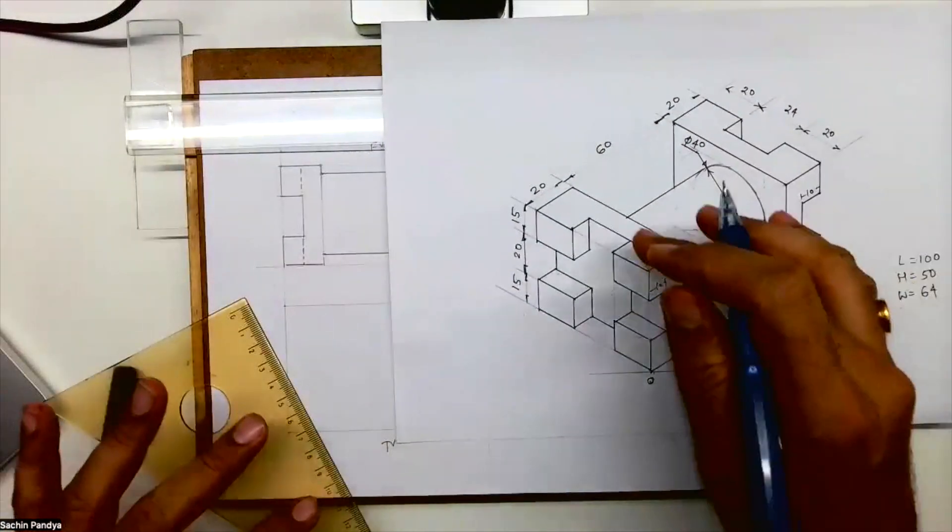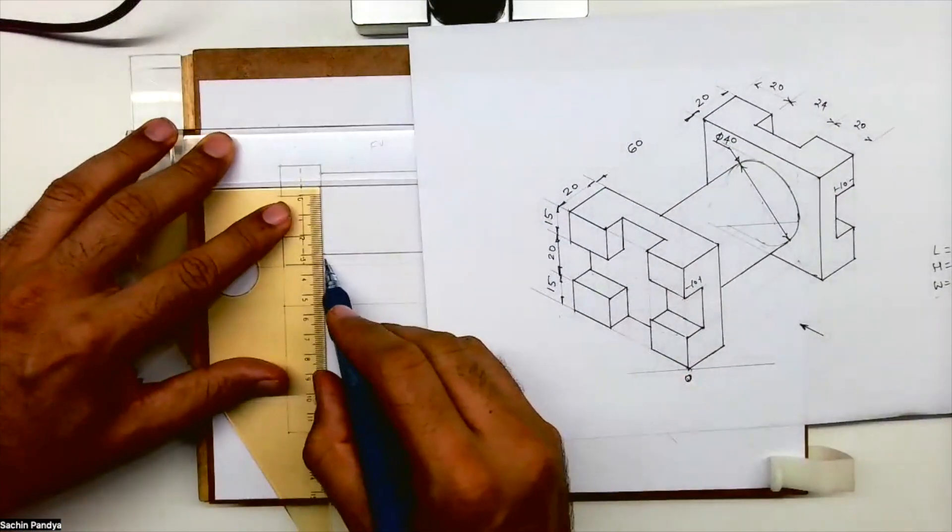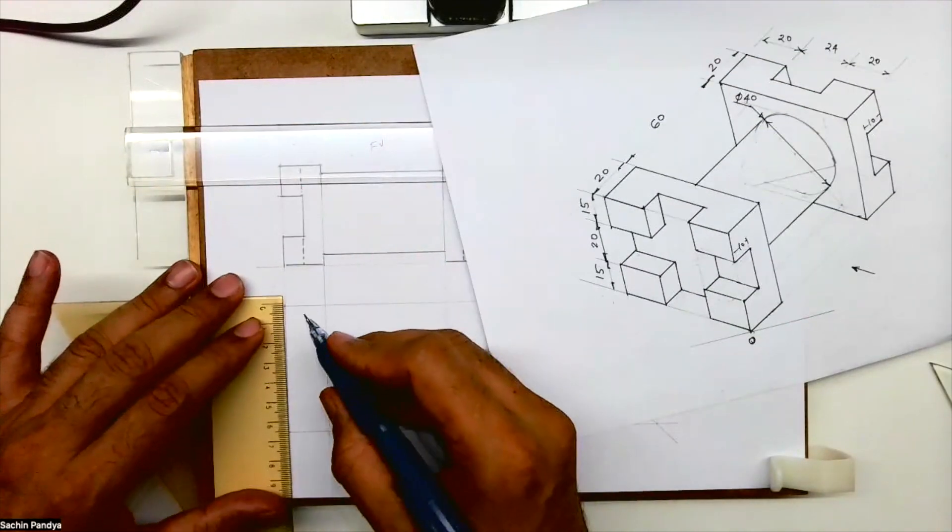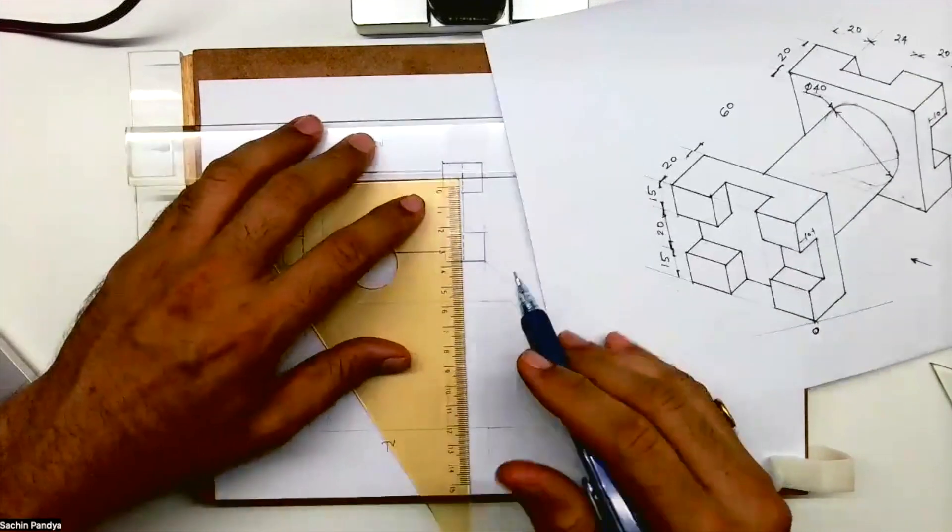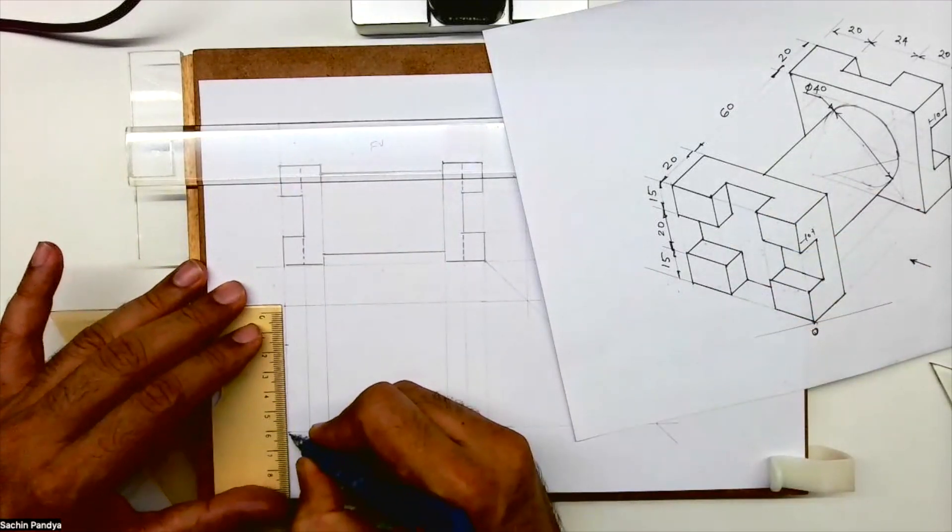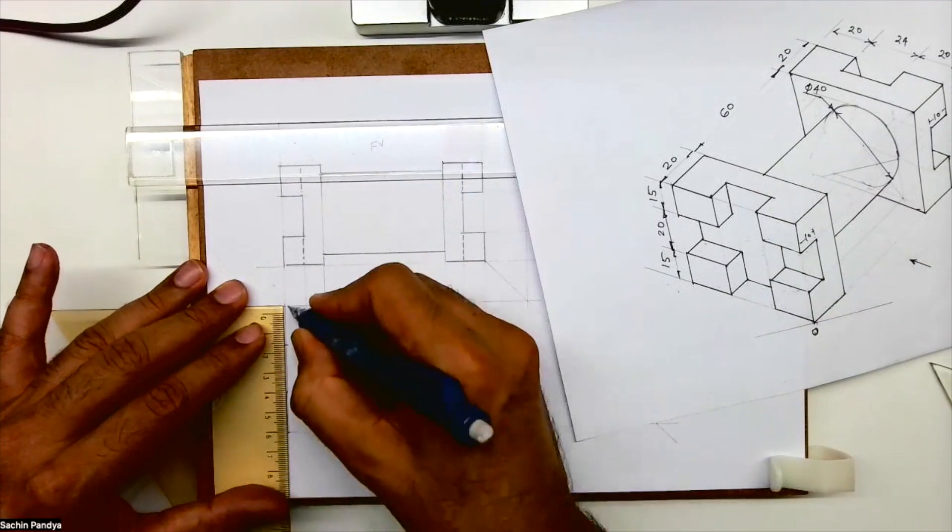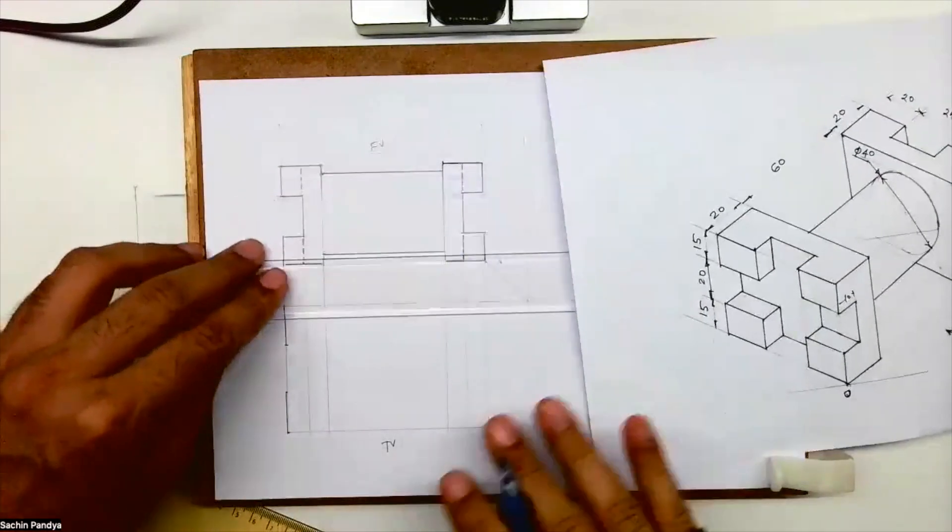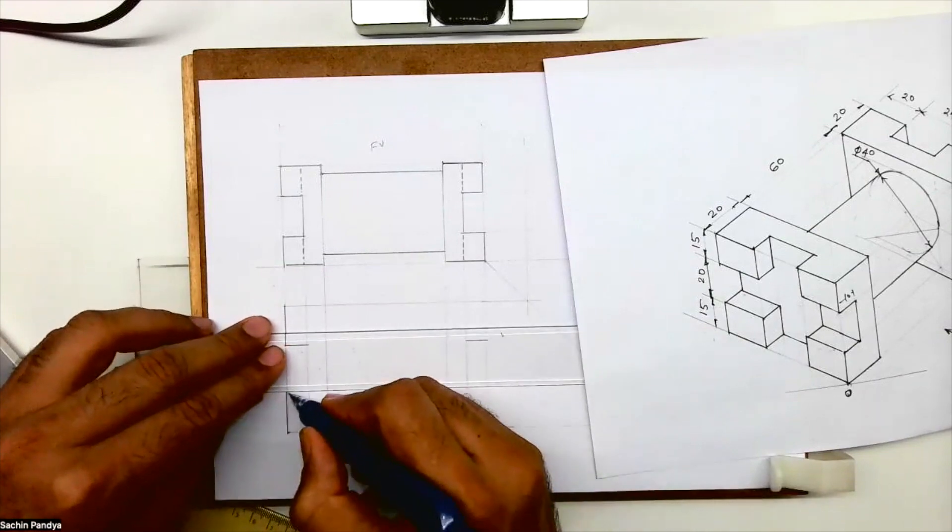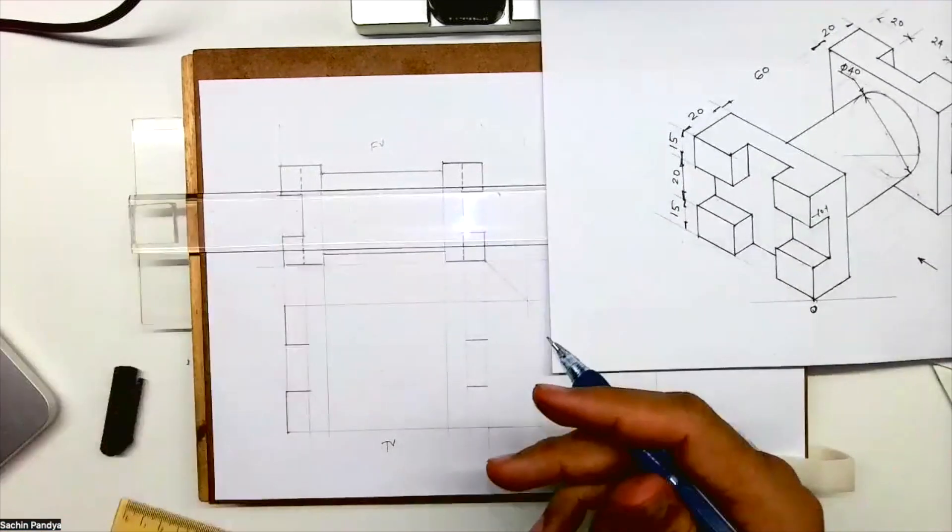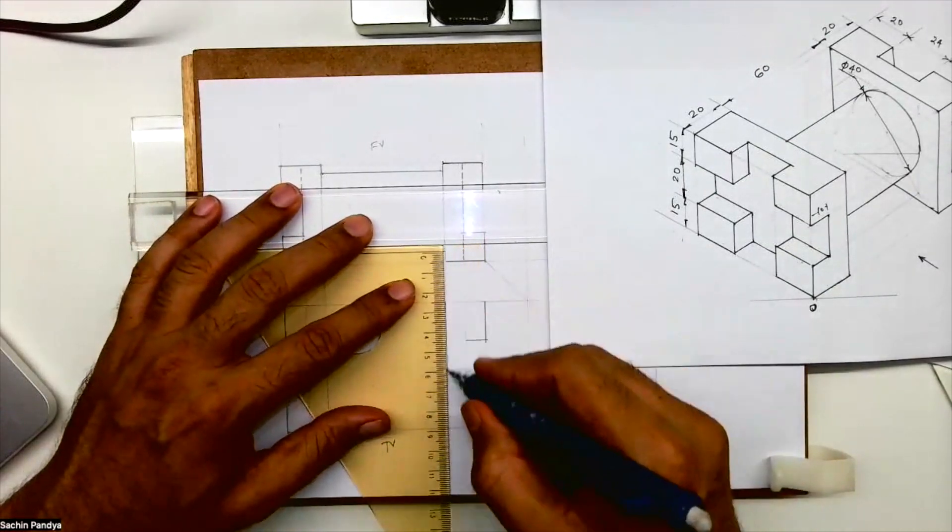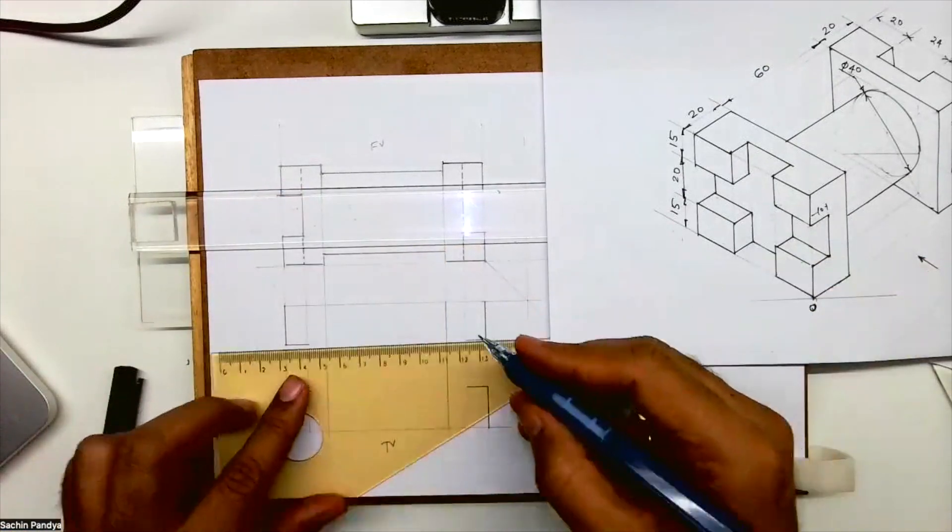We are done with front, now I need to draw top view. I need to project this. That's why it's called orthographic projection - half of the things we get like this, I don't have to take dimension again. That's the beauty of this. Again we'll take 20-20. When I do it here I'll do it on the other side also because I know it is on both sides.